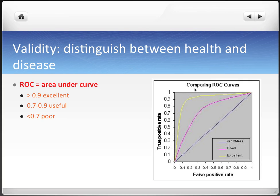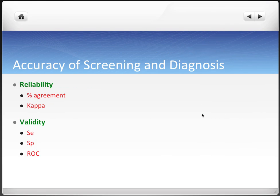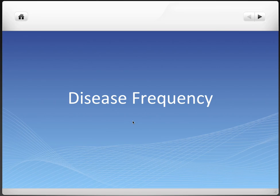ROC measures the accuracy of the operator of the experiment — you measure the area under the curve, and the curve that comes up higher has a higher area, indicating a better examiner. So to review, reliability and validity are the two measurements we're concerned about for the accuracy of screening and diagnosis. Tune in for my second video where I'll be discussing disease frequency. I hope this video was helpful, and I'll see you next time.